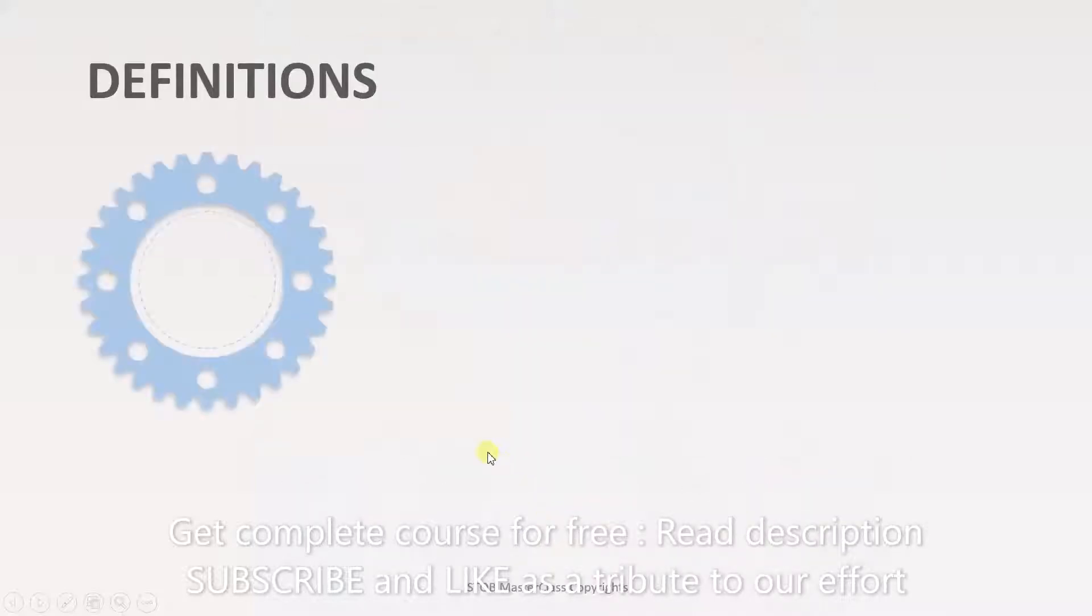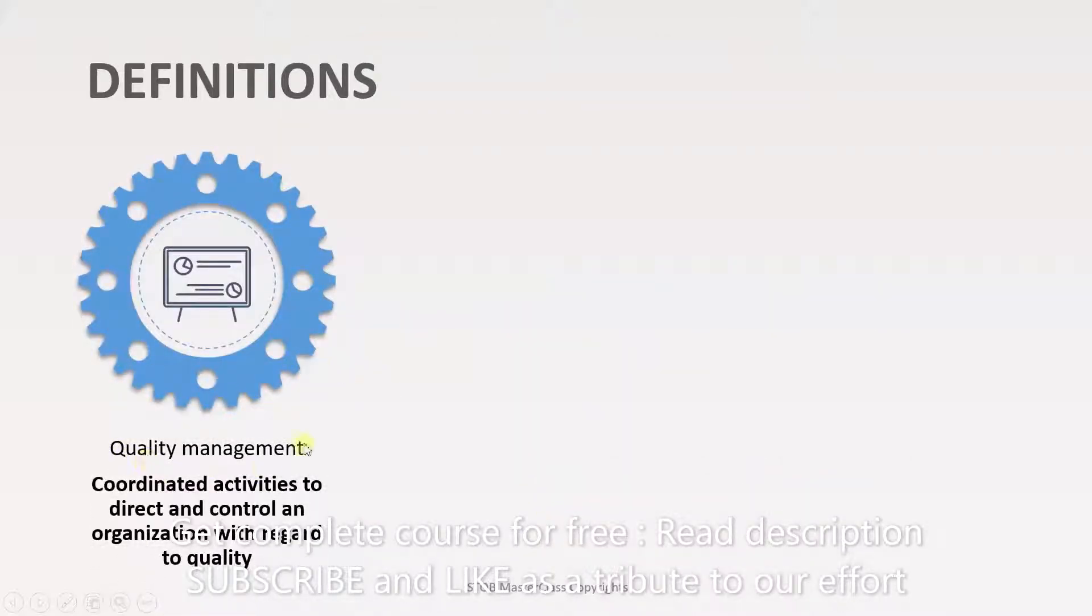Now let's deal with each of these topics one by one. The first is quality management. This is a series of coordinated activities to direct and control an organization with regard to quality. We are establishing a management system in an organization, and the objective of this management system is to achieve the quality requirement of the organization.